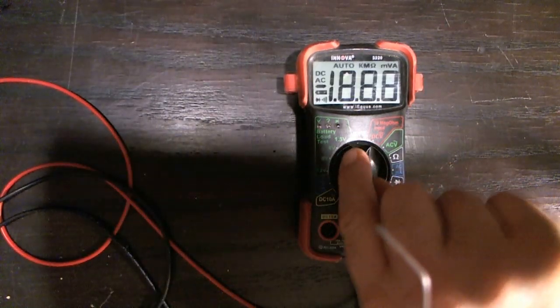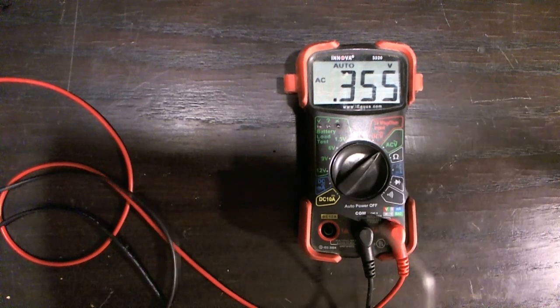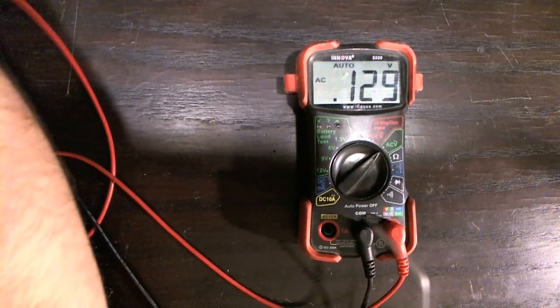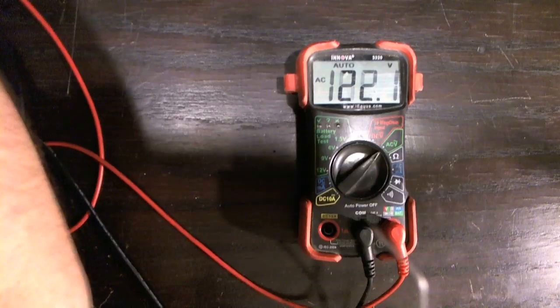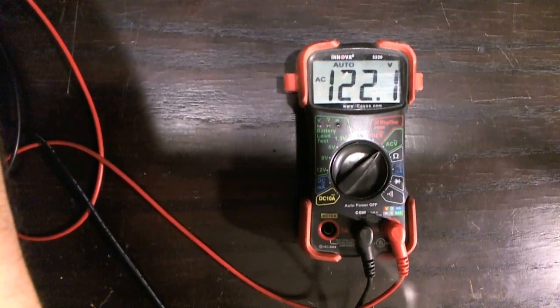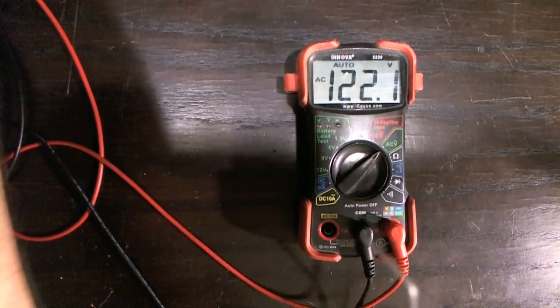Okay, next up, I'm going to set it to the AC setting, and I got my probes here. I'm going to go ahead and stick them into the wall socket. Just kidding. Okay, I got it in there, and you can see it's 122 volts coming out of this outlet.